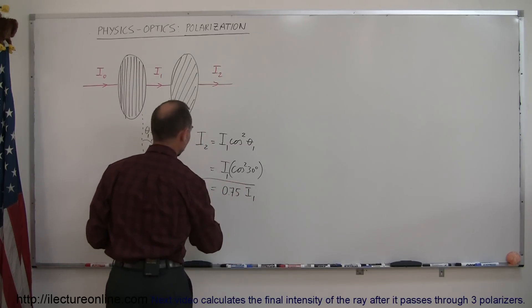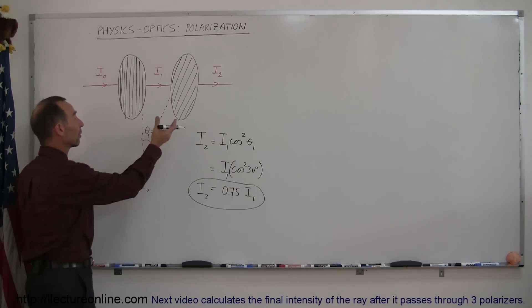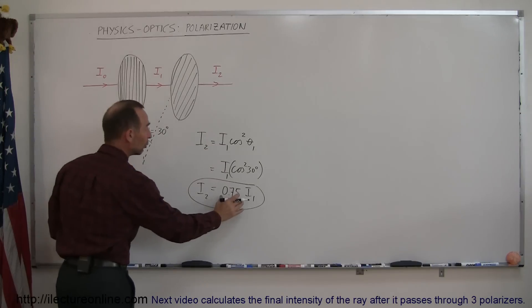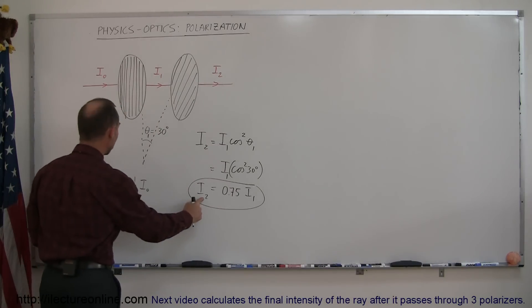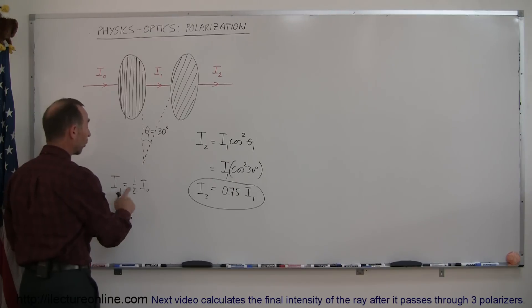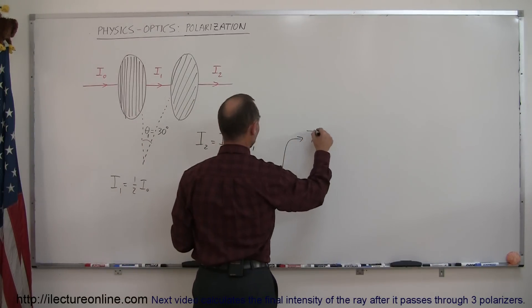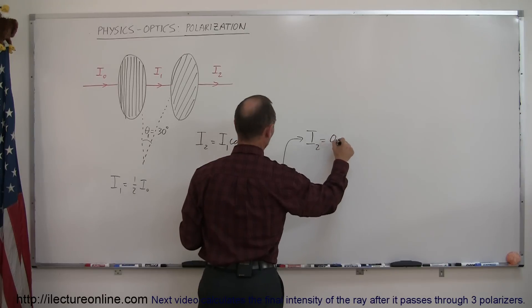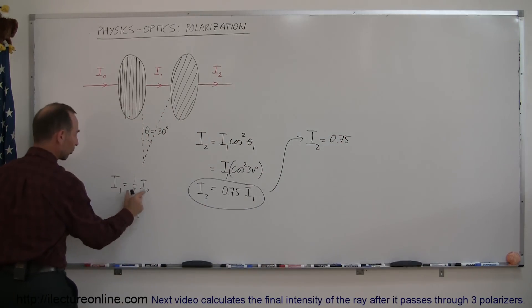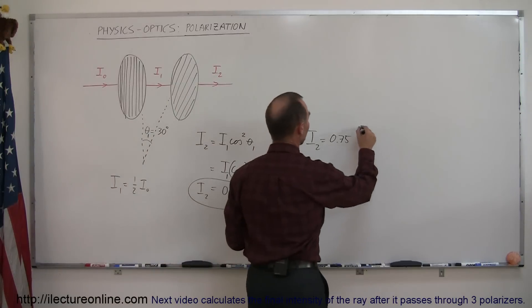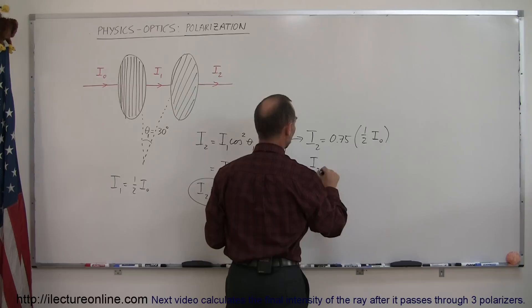So which means if there's a second polarizer behind the first one, and that polarizer is angled at 30 degrees relative to the first one, then you lose some additional intensity. Now, what will i sub 2 then be in terms of i sub 0? Then, of course, you say, all right, that means that i sub 2, which is equal to 0.75 times i sub 1, and since i sub 1 is one half of i sub 0, we then plug in one half of i sub 0, and so we can then say that i sub 2